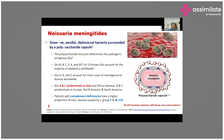This is the Neisseria meningitidis structure. This bacteria is gram-negative, aerobic, diplococcal in shape, and surrounded by polysaccharide capsules. This polysaccharide structure determines the pathogen's serogroup of this particular bacteria.